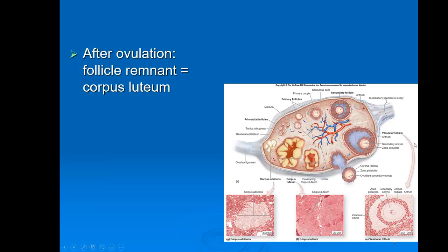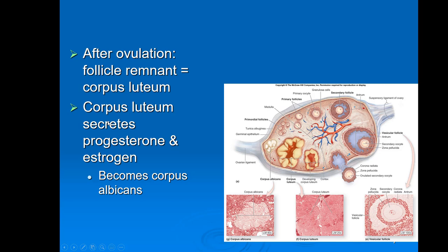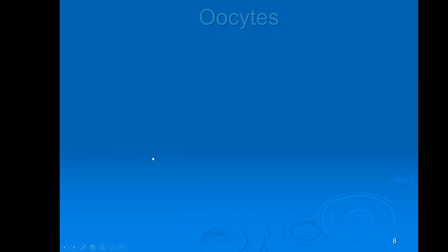After ovulation, once that secondary oocyte is released, the rest of the follicle remains in the ovary and turns into something called the corpus luteum. The corpus luteum is important because it secretes both progesterone and estrogen — progesterone being really important at this stage. Eventually the corpus luteum breaks down and shrinks into what we call the corpus albicans.